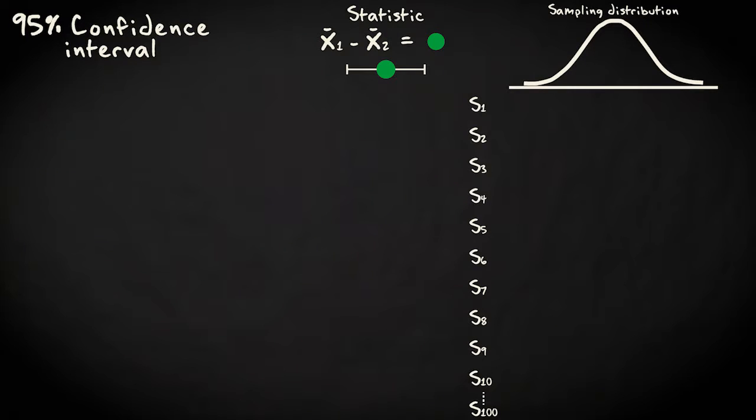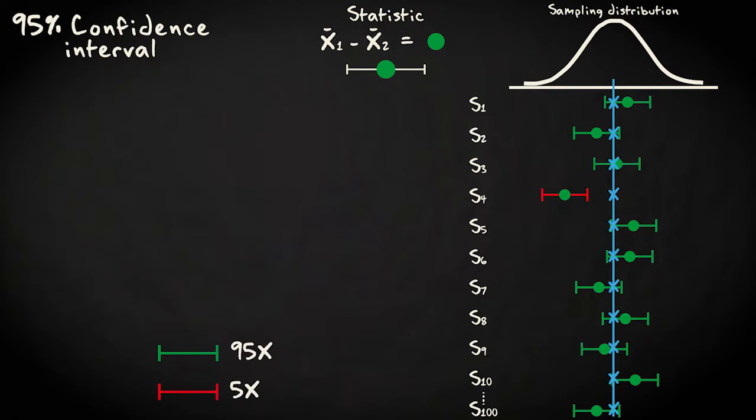So if I take 100 samples, calculate a sample statistic, and a 95% confidence interval around the statistic each time, then I expect 95 of these intervals to contain the population parameter value.